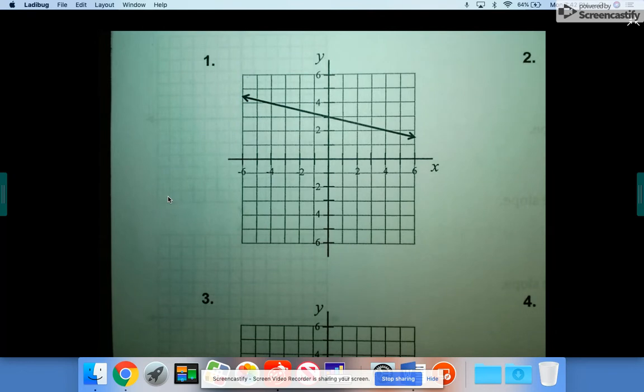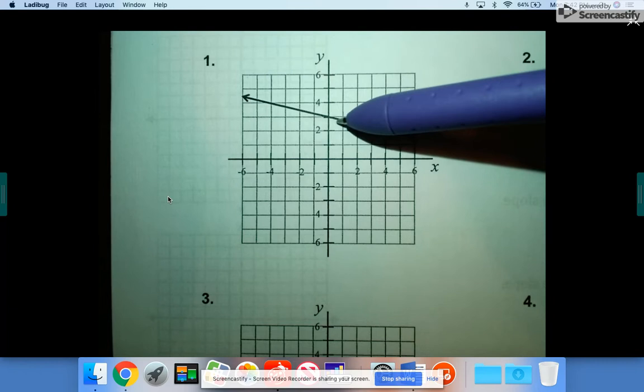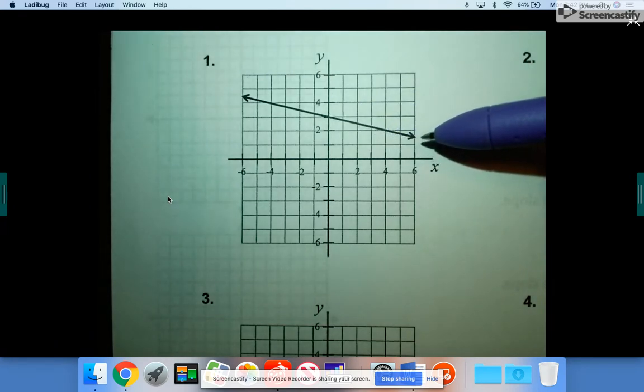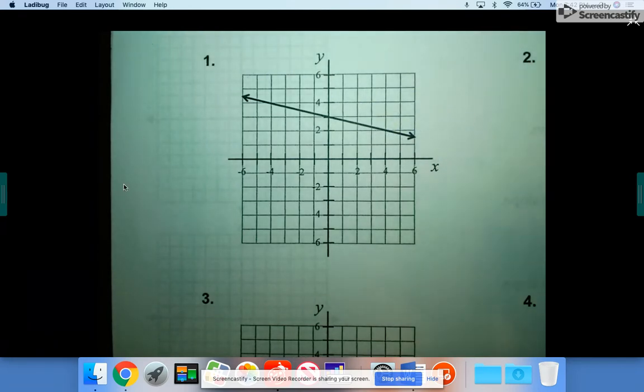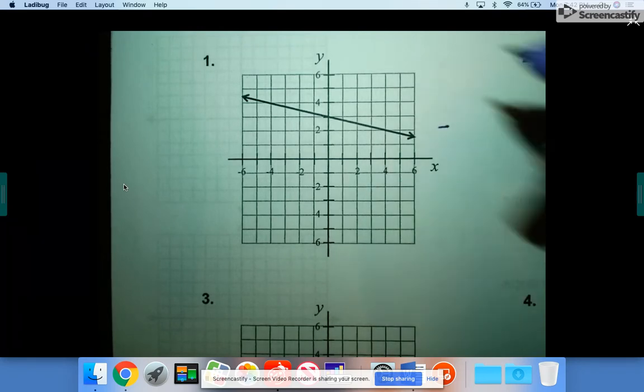So you guys are going to count slope by doing rise over run, or I hope you noticed in this case it is falling from left to right. So this is actually going to be a negative slope. So I'm going to go ahead and write a negative just so I don't forget down is negative.